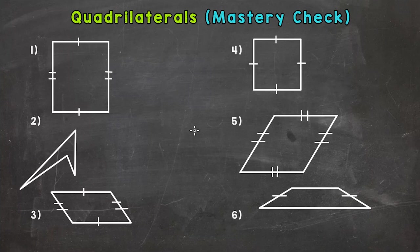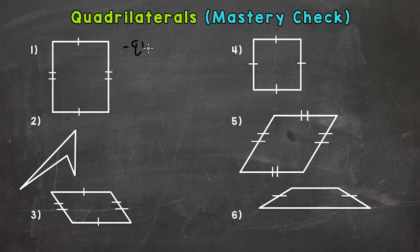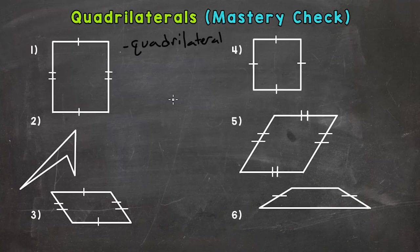I'm going to show you a few things on number one so we know exactly what to do and what some of these lines on the quadrilaterals mean. We want the best classification — best name — for this quadrilateral. We do know it is a quadrilateral: it has four sides and four angles, but we can get more specific. This quadrilateral has two pairs of parallel sides — the left and the right are one pair, and the top and the bottom are the second pair — so it is a parallelogram.